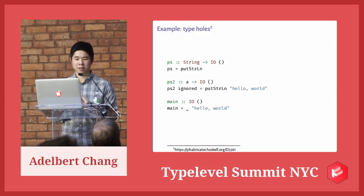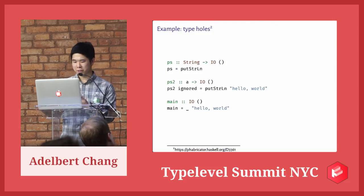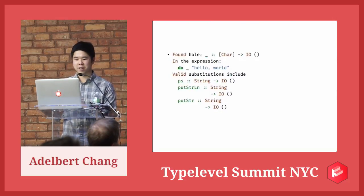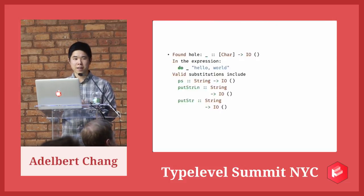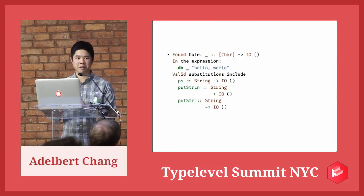What's even cooler is that recently — within the past week or two — a patch was added (not yet in mainline GHC) where the compiler also tells you what values in scope match the type hole. It gives you something like: 'found hole, expected string to IO unit; valid substitutions include these three functions in scope.' If you forget in a moment what's available, you just put an underscore and let the compiler tell you — that's really another way to have a conversation with the compiler.